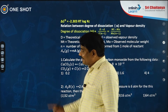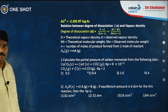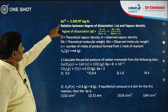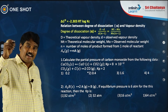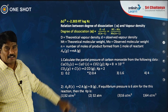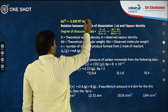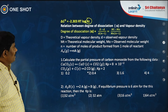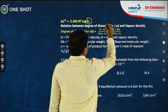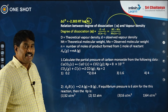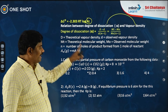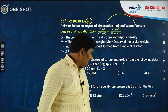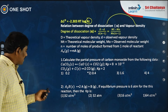ΔG° = −2.303 RT log KC, where KC is the equilibrium constant in terms of concentration. This is important: at equilibrium, ΔG = 0, but ΔG° (standard Gibbs free energy change) equals −2.303 RT log KC.